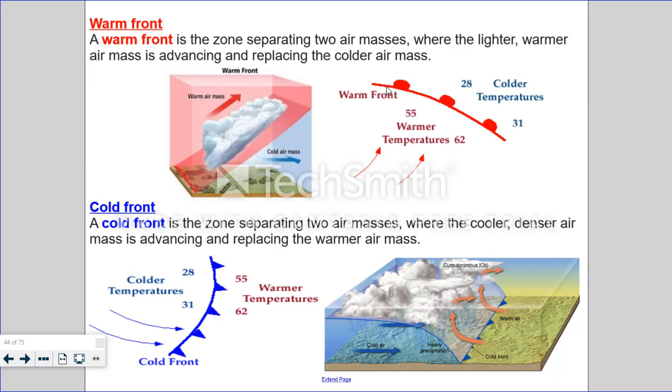A warm front is depicted by a red line with red dots on it. And you can see the temperatures that are moving in 55 to 62 degrees are warmer than the temperatures that were there previously. These temperatures range from 28 to 31 degrees. The dots indicate the direction that the warm front is moving in. So this warm front is coming in. It's moving in a northeast direction.